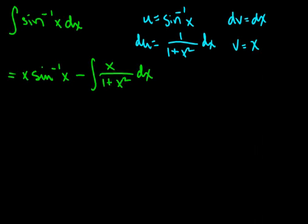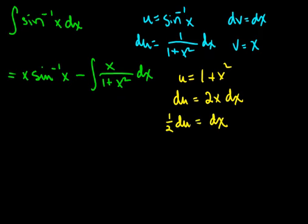Now for the integral there, we can use u substitution, typical u substitution, using 1 plus x squared as u. And du would be 2x dx. If I divide both sides by 2, 1 half of du is going to be x dx. So I can replace x dx with 1 half du, and I can replace the denominator with just u.